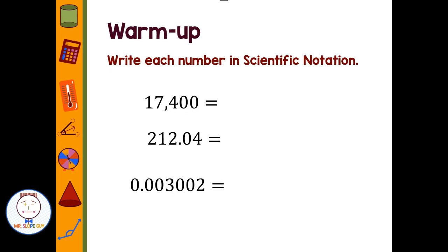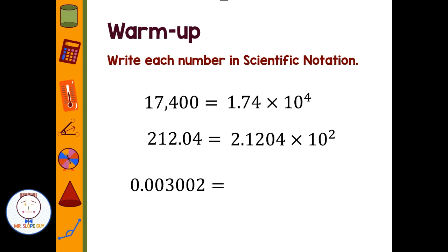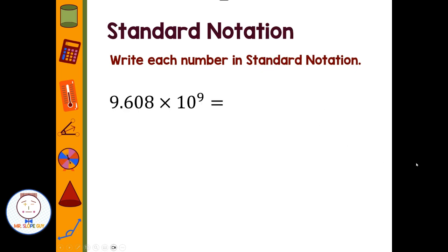I'll pause the video here and you can write each of these in scientific notation. Welcome back. Seventeen thousand four hundred in scientific notation would be 1.74 times 10 to the fourth. The second one would be 2.1204 times 10 to the second power. And the last one, 3.002 times 10 to the negative three. Notice how very small numbers end up with negative exponents and very large numbers end up with positive exponents.